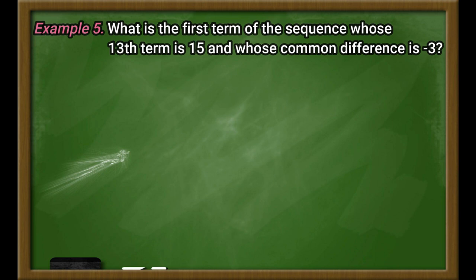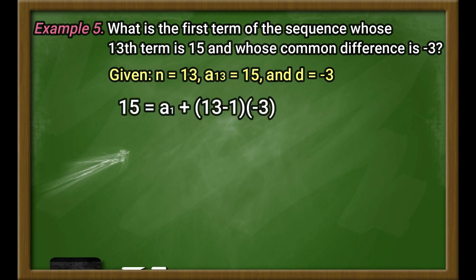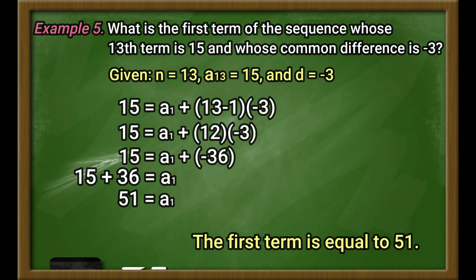Example number 5: What is the first term of the sequence whose 13th term is 15 and whose common difference is negative 3? Given: n equals 13, A sub 13 equals 15, and d equals negative 3. Substituting all of the values, we have 15 equals A sub 1 plus the quantity 13 minus 1 times negative 3. Simplifying, we have 15 plus 36 equals A sub 1. Therefore, A sub 1 is equal to 51. The first term is equal to 51.